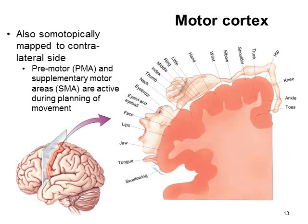Looking at the motor cortex: if we somatotopically map the motor cortex to the contralateral side, we have premotor areas and supplementary motor areas which are active during the planning of movement. When we look at the primary motor cortex itself, very similar to the somatosensory cortex, the areas dedicated to certain parts of the body are larger depending on how much motor input they have. The face and the hands require large numbers of muscles and a very large amount of motor input, so they take up a larger portion of the cortex.